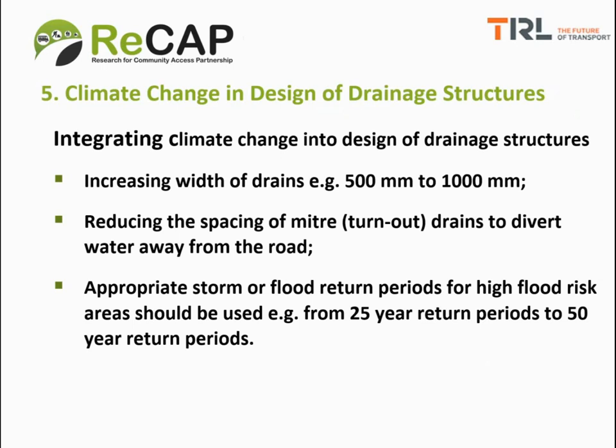The storm return period does not mean the storm will take that many years to occur. For example, a 50-year return period does not mean it will take 50 years for the storm to happen — you can experience a 50-year return storm almost twice in 10 years, as countries like Mozambique have seen recently with massive cyclones. A storm return period simply means the probability of the storm occurring in terms of years.